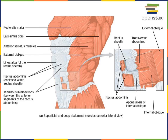Next we'll move down to the muscles of the abdominal wall. The most superficial is the external oblique, or external abdominal oblique. When this muscle contracts it causes compression of the abdominal cavity and can cause the vertebral column to flex or rotate. Deep to the external oblique is the internal oblique, which similarly causes compression of the abdominal cavity as well as flexion or rotation of the vertebral column.